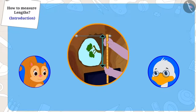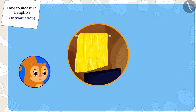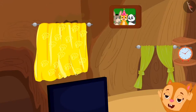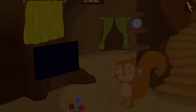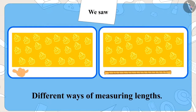Appu had measured the length of the window with the help of a rope, and because the length of the rope cannot differ, uncle's and Chanda's measurement became exactly the same, and Chanda found a curtain that was the right measurement for her window. See how beautiful Chanda's curtain looks, and she is now dancing with joy! Children, in this video we saw different ways of measuring length. In the next video, we will learn more about this with the help of interesting examples.